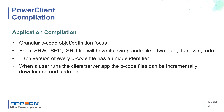Each version of every P-code file has a unique identifier so that when a user runs the client-server app, the P-code files can be incrementally downloaded and updated depending on the function the user is accessing. With this new compilation approach, it enhances PowerBuilder compilation of PBD files so that the PowerClient's update routine can reliably and incrementally update client-server applications.